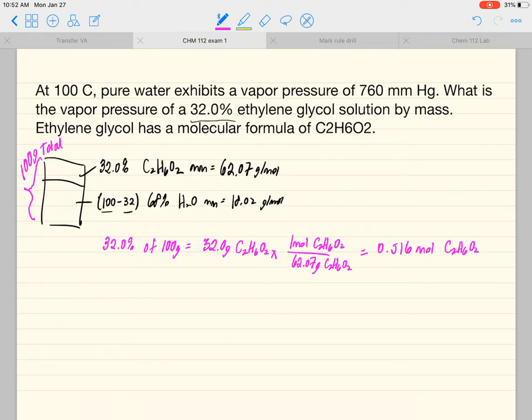I want to do the same thing with the water. So 68% of 100 grams is equal to 68.0 grams of water. One mole of water weighs in at 18.02 grams. So 68 divided by 18.02 is equal to 3.77 moles of water.